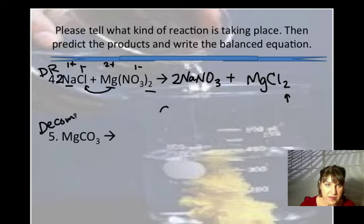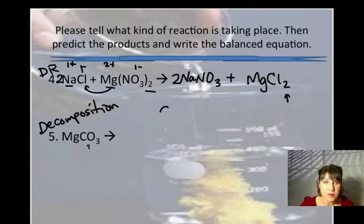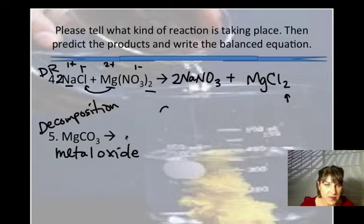Let's look at another type of reaction. This one is a decomposition reaction. The way I know that is that there's only one reactant. There's just one thing. The only thing it can do is fall apart into the pieces that it's made from. Now, carbonates always decompose into the metal oxide.